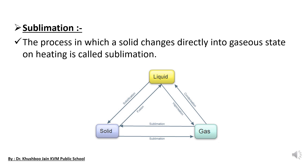After some days, naphthalene balls shrink and eventually disappear — they do not melt or pass through a liquid state. This compound undergoes sublimation: it goes directly from solid to gaseous form. This process is called sublimation.